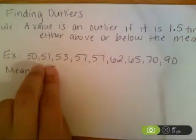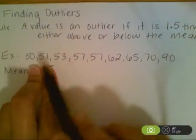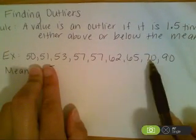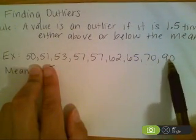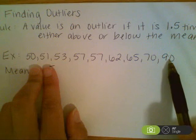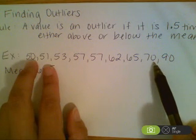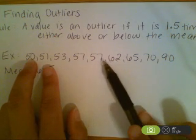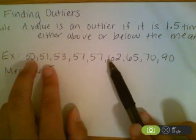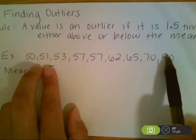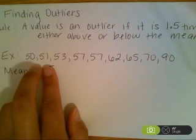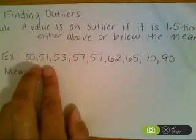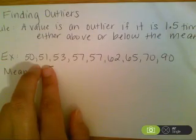If you did not know what the mean was, looking at this data set, you might reasonably assume that 90 is an outlier. If you look at most of the data, it's between 50 and 70. The majority of the data is in the 50s. There's only a few values above it. 90 on a first eyeball glance looks like it could potentially be an outlier.